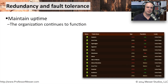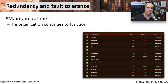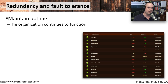Whenever we think of keeping all of our systems up and running in an environment, we very often think about what could happen if we lose a server, if we lose a router, if we lose another component within our devices. So we have to think about redundancy and fault tolerance. The idea is to keep things up and running and maintain uptime — we want to be sure that all of the systems on our network are available, and our company continues to function the way it should.